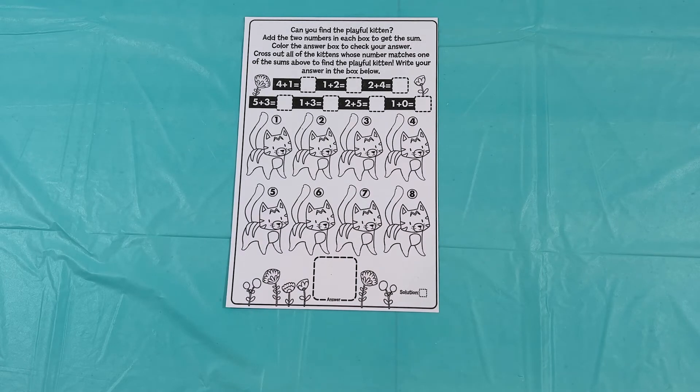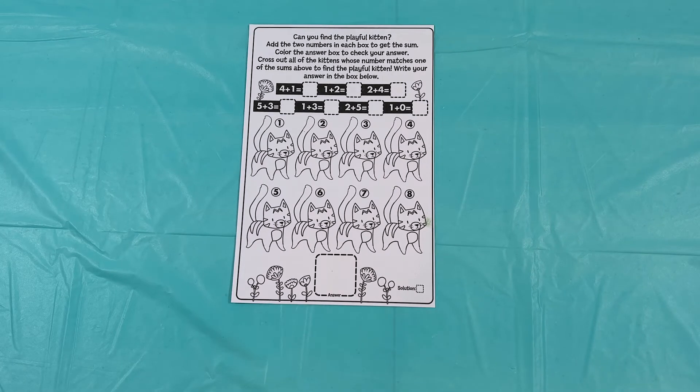Okay, now on to the next page. This page says, can you find the playful kitten? Add the two numbers in each box to get the sum. Color the answer box to check your answer. Cross out all of the kittens whose number matches one of the sums above to find the playful kitten. Write your answer in the box below. Okay. So what we're going to do is we're going to solve these addition problems and whichever number that comes out to be, that's which cat we're going to cross off.